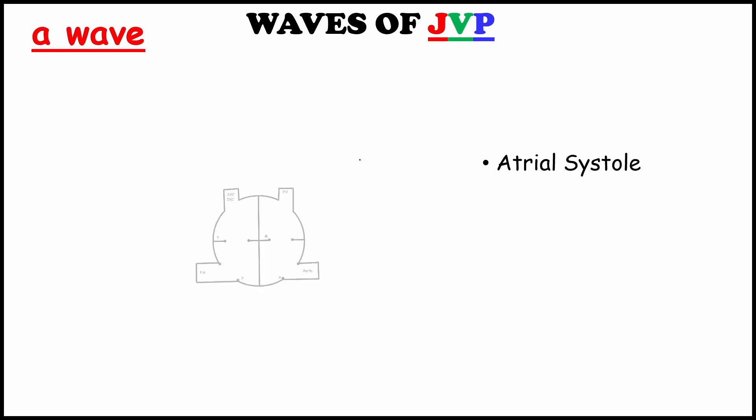Now we will see about waves of jugular venous pressure. First comes our A wave. It happens in atrial systole. I have made a simple but efficient diagram of heart. Anything happens in the right atrium will be the reason for jugular venous pressure. In atrial systole, atrium starts to contract. This will make the positive pressure in the atrium. So the blood in the superior vena cava will deflect upwards. This causes the positive A wave.